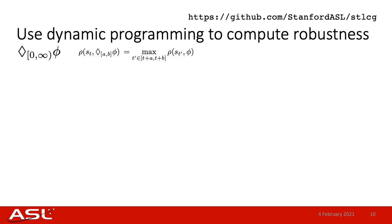Here we have the eventually operator being applied to a formula phi, and the corresponding robustness formula is shown on the right. For simplicity, let's assume the time interval [a, b] encompasses the entire length of the signal, so we have zero to infinity. What we want to do is compute the maximum robustness value of phi over the entire signal. What I'm going to show next is very similar to a recurrent neural network — the structure is the same, but rather than having a neural network inside the recurrent cell, it will just be a max operation.